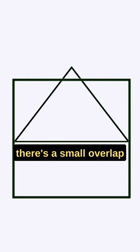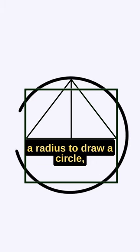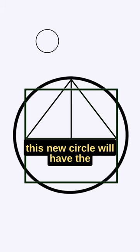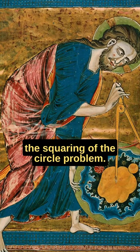As you can see, there is a small overlap between the square and the triangle. If we use the height of this triangle as a radius to draw a circle, we will find that this new circle will have the same circumference as the square's perimeter, therefore providing a solution to the squaring of the circle problem.